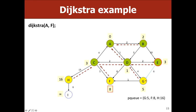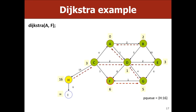The next node dequeued is G. G's neighbor is F. Going through G gives F a cost of 5+1=6, which is less than 8, so F is updated to 6. Then we dequeue F with cost 6. Tracing back the previous pointers, the path is A to D to G to F.